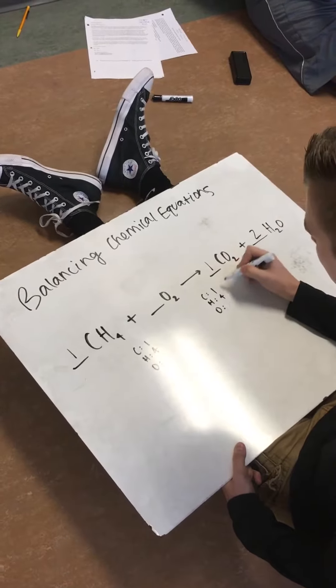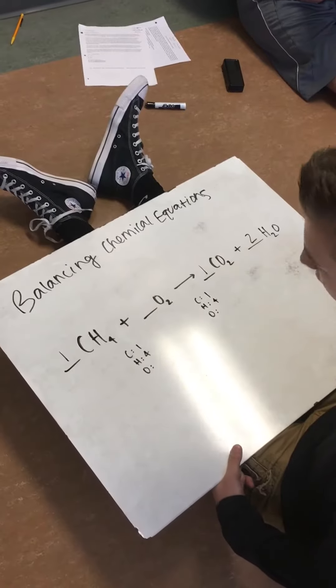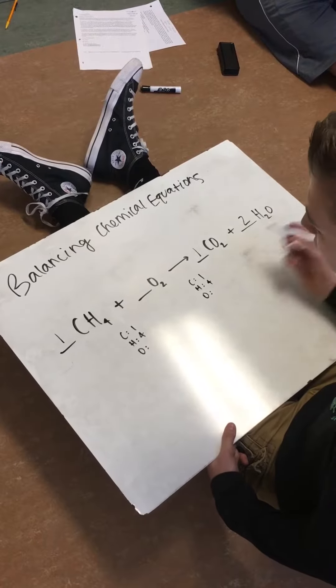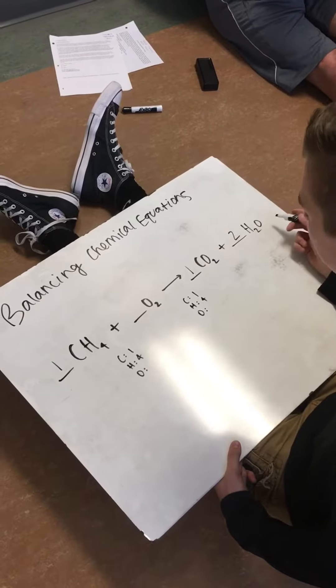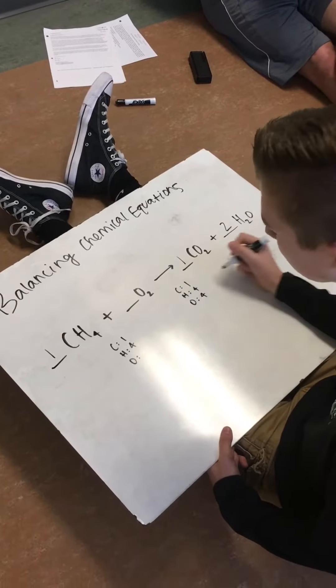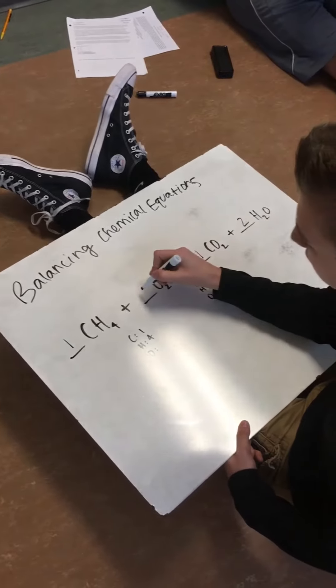And then lastly, you look at the oxygen. If you currently have two over here, you have two here and two here, so then that's four on the right. So you need to put a two here.